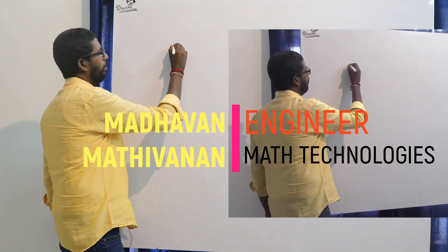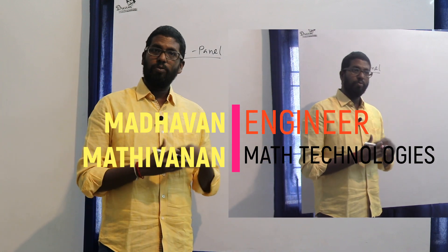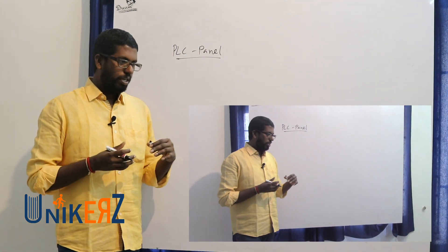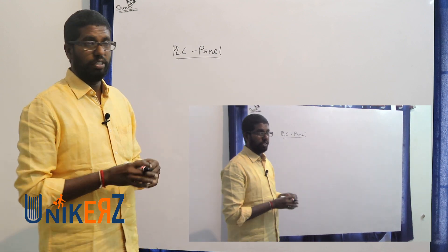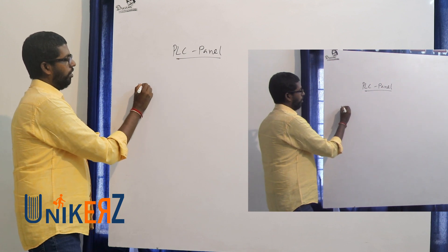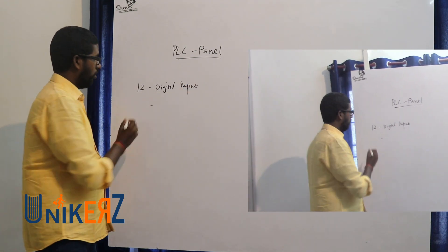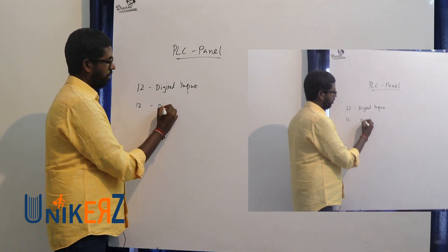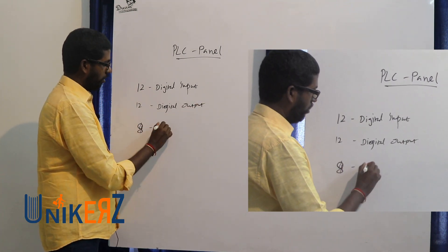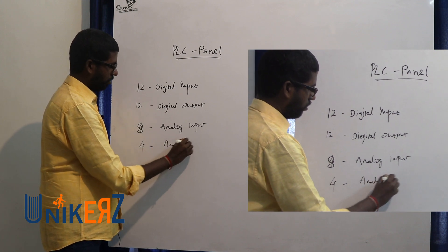First we will talk about the PLC panel. In this project we will talk about the T industry and the input-output list: 8 analog inputs and 4 analog outputs.